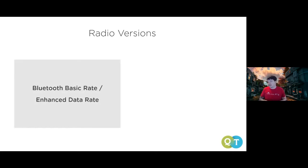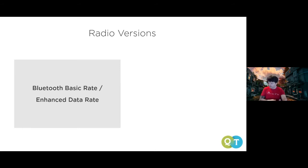Bluetooth can be broken down into two major specs. The first is Bluetooth Basic Rate and Enhanced Data Rate — the original Bluetooth. Programming for it is like developing a client-server application over open sockets: you send and receive bytes as a stream, and everything built on top determines what each byte means. You use Basic Rate or Enhanced Data Rate for things like music streaming and headphones, because you want that open streaming communication.